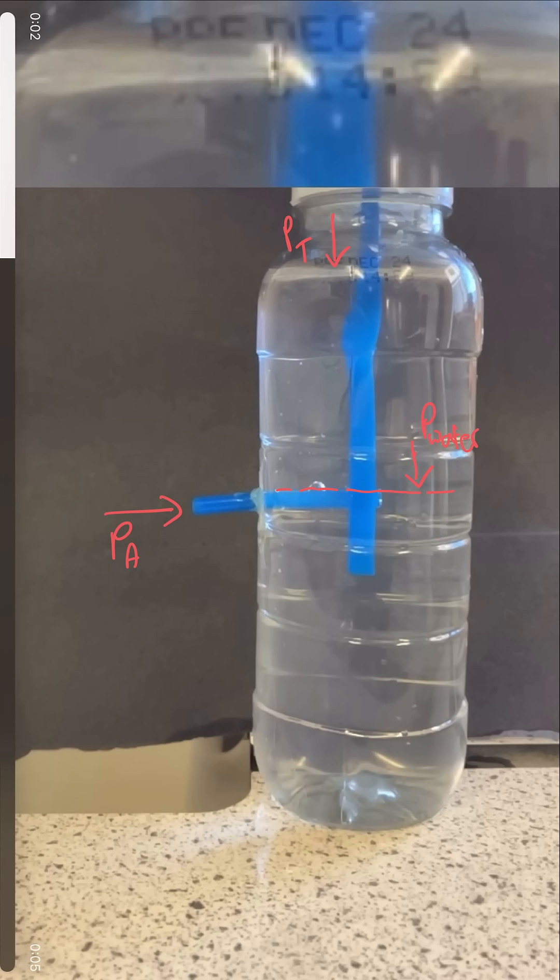But why doesn't any air get in through this vertical straw and come in and increase the pressure up here, which would then force the water out through the side?